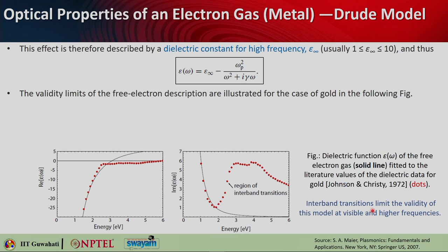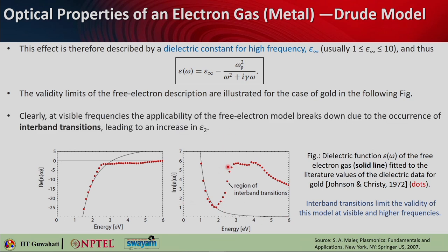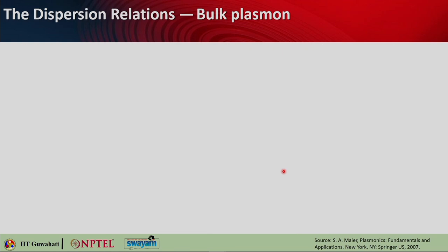Interband transitions limit the validity of the free electron model at visible and higher frequencies. Higher the frequency, the model performs increasingly poorly. At visible frequencies, the free electron model breaks down due to interband transitions, which give rise to significant ε₂ contributions. The complete model including ε∞ must be used.